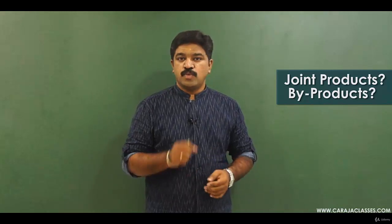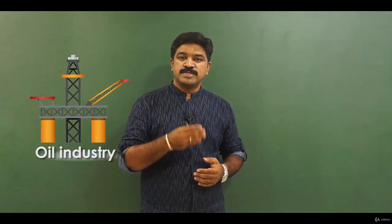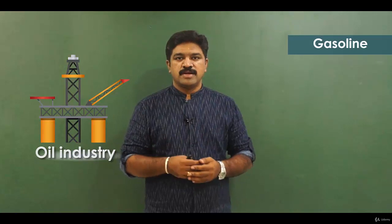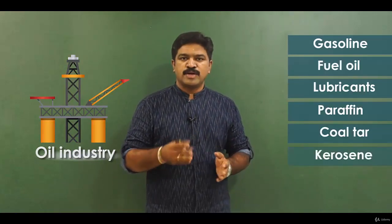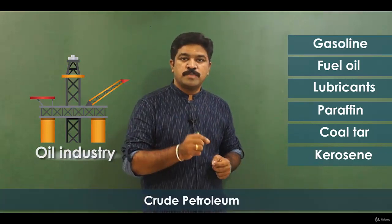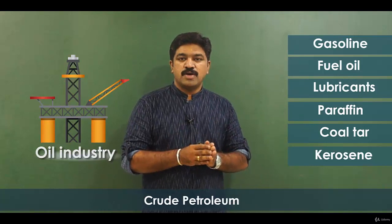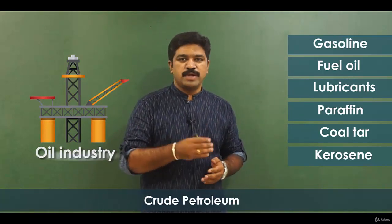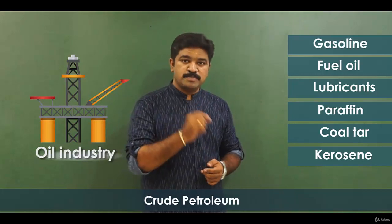In this session, let us understand what are joint products and byproducts. Let's take the oil industry as an example. Here you can see products like gasoline, fuel oil, lubricants, paraffin, coal tar, and kerosene. All these products are produced from crude petroleum. What is significant here is that all these products have equal importance and are simultaneously produced from the same process.